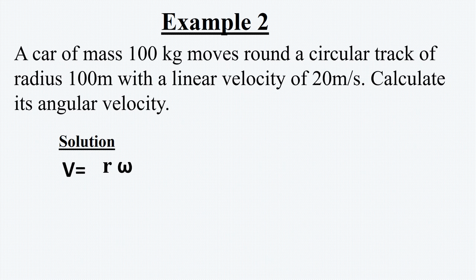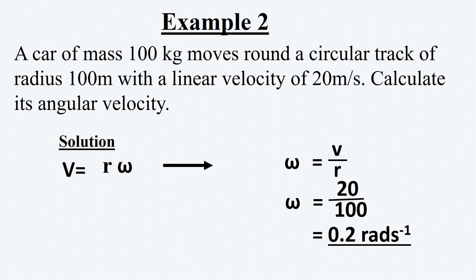We know that v equals r omega, which implies that omega equals v over r. So we need to substitute v and r in our formula, and so omega equals our velocity, which is 20 meters per second, divided by the radius, which is 100 meters. This simplifies to 0.2 radians per second.